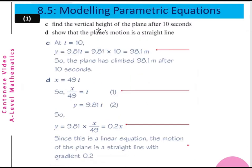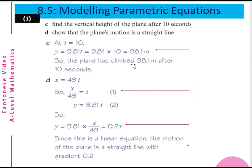Part c: Find the vertical height of the pen after 10 seconds. After 10 seconds, t equals 10, so y equals 9.81·10 = 98.1 meters. So the pen has climbed 98.1 meters after 10 seconds.